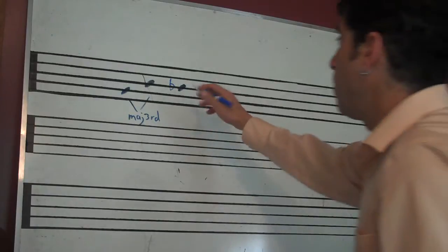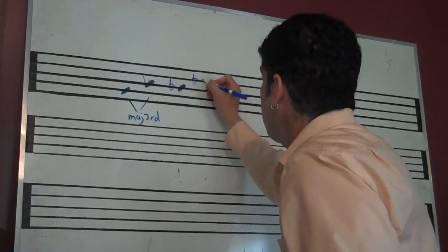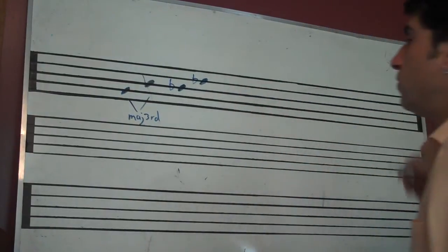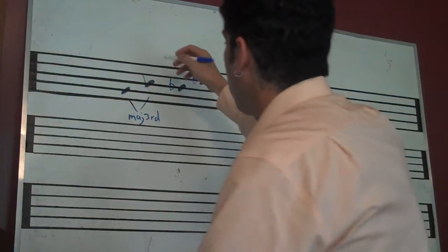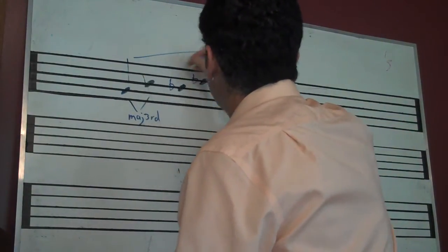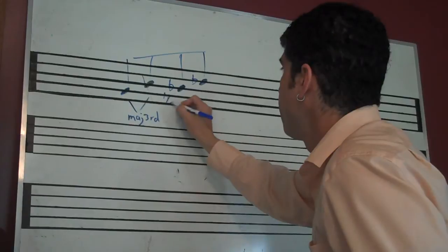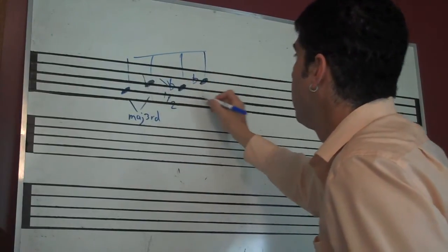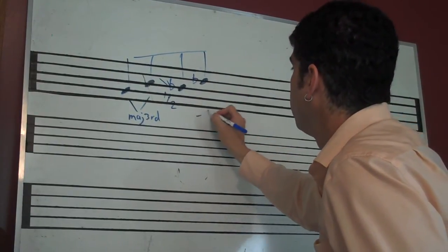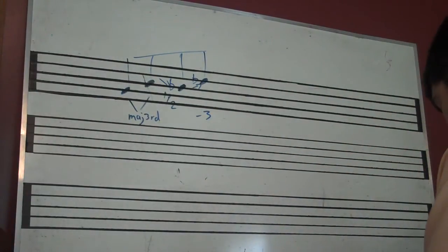And then maybe we go up a minor third, so B flat to D flat. So we've got this little four note pattern. You've got a major third, down a half step, and up a minor third. Right there. So you've got this pattern. Kind of interesting.